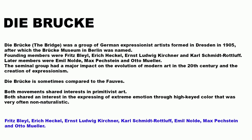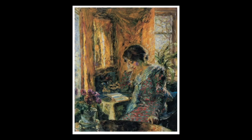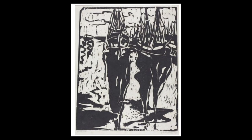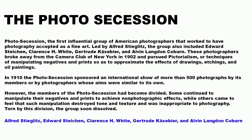Die Brücke — the Bridge in English — was a group of German Expressionist artists formed in Dresden in 1905, after which the Brücke Museum in Berlin was named. Founding members were Fritz Bleyl, Erich Heckel, Ernst Ludwig Kirchner, and Karl Schmidt-Rottluff. Later members were Emil Nolde, Max Pechstein, and Otto Mueller. The group had a major impact on the evolution of modern art and the creation of Expressionism. Die Brücke is sometimes compared to the Fauves — both movements shared interest in primitive art and expressing extreme emotions through high-key, non-naturalistic color. You can see a lot of woodcarving prints in their work.